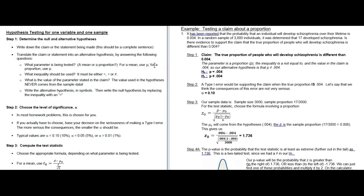From that, we figure out what kind of parameter we're testing. This week we're doing everything to do with proportions, and this problem even uses the word 'proportion.' Some problems will say 'percentage' instead. Our parameter is a proportion, which we use P for. Then we figure out the inequality — either less than, greater than, or not equal to. If it says something like 'changed' or 'different,' that means not equal to. Here our inequality is not equal to, and the value from the claim is 0.004.